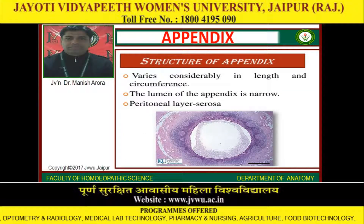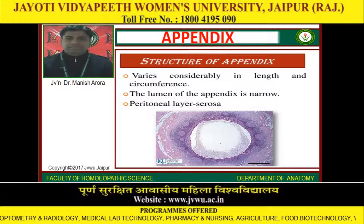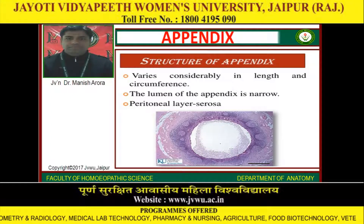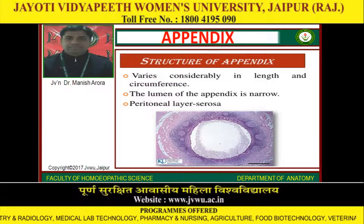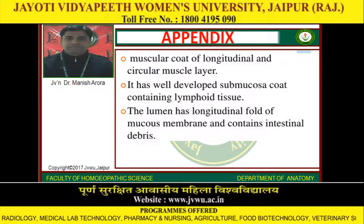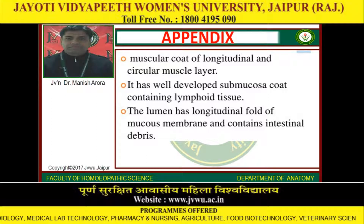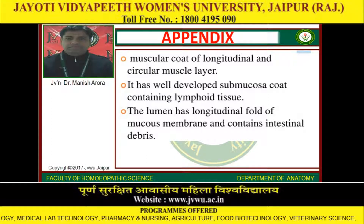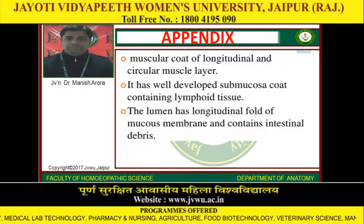The structure of the appendix varies considerably in length and circumference. The lumen of the appendix is narrow. It has a peritoneal layer called the serosa, and a muscular coat of longitudinal and circular muscle layers. It has a well-developed submucous layer containing lymphoid tissue. The lumen has a longitudinal fold of mucous membrane and contains intestinal debris.